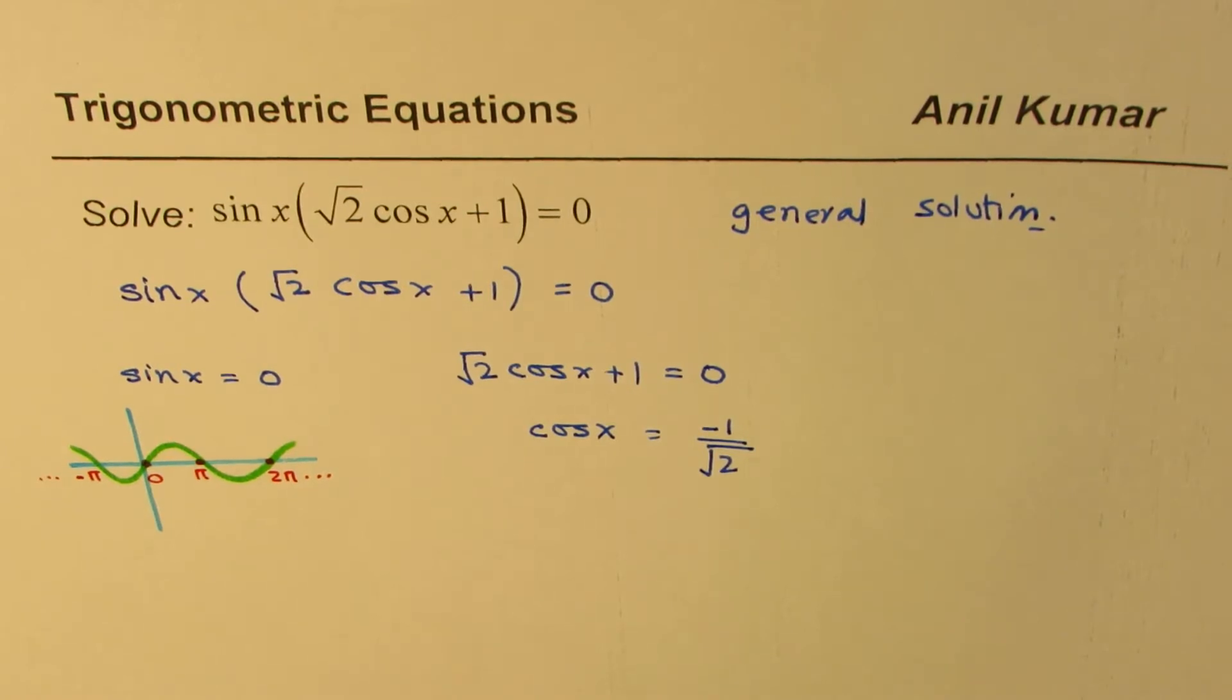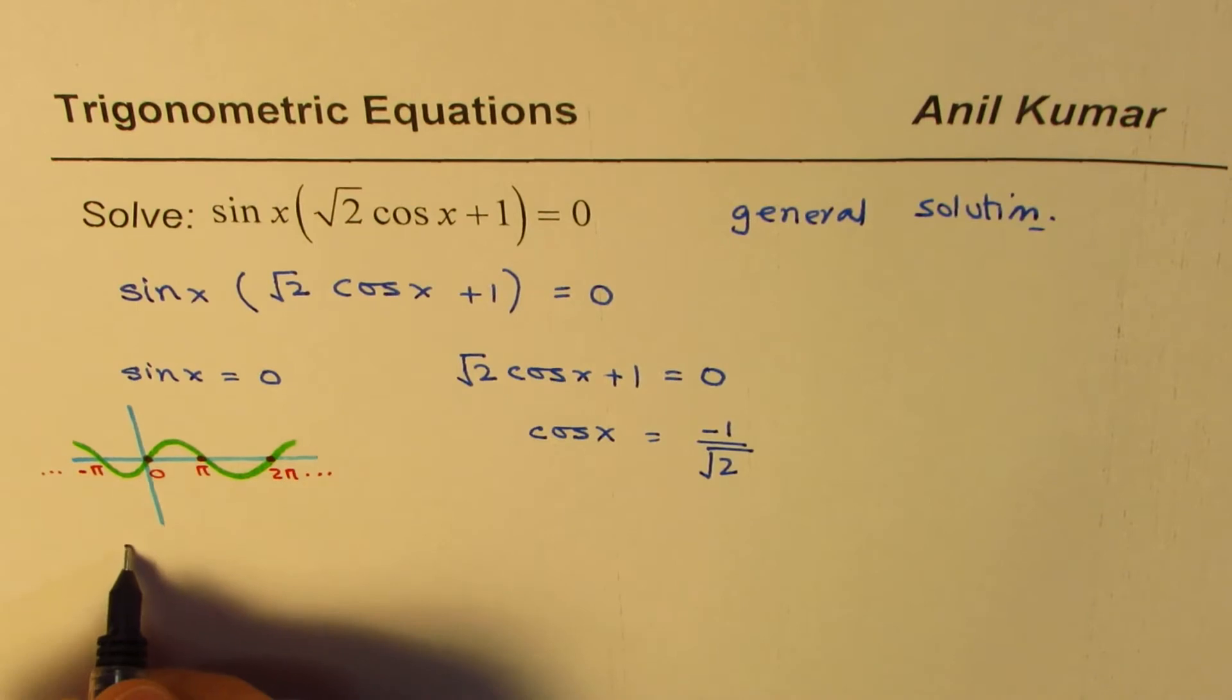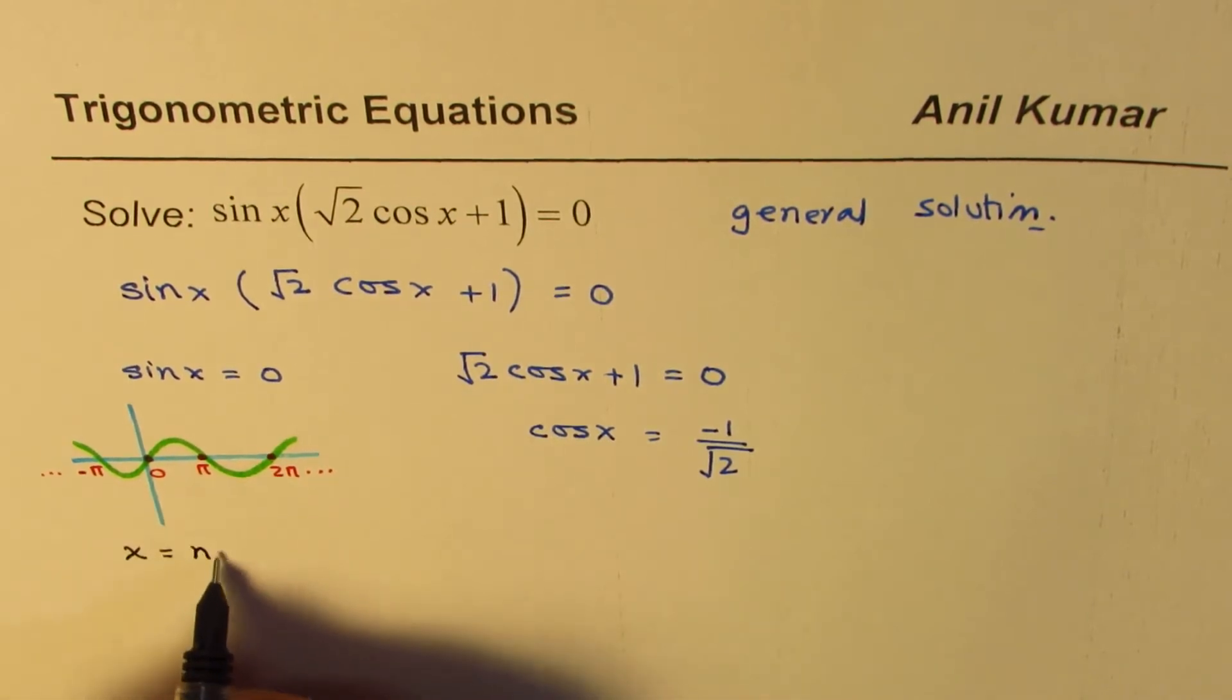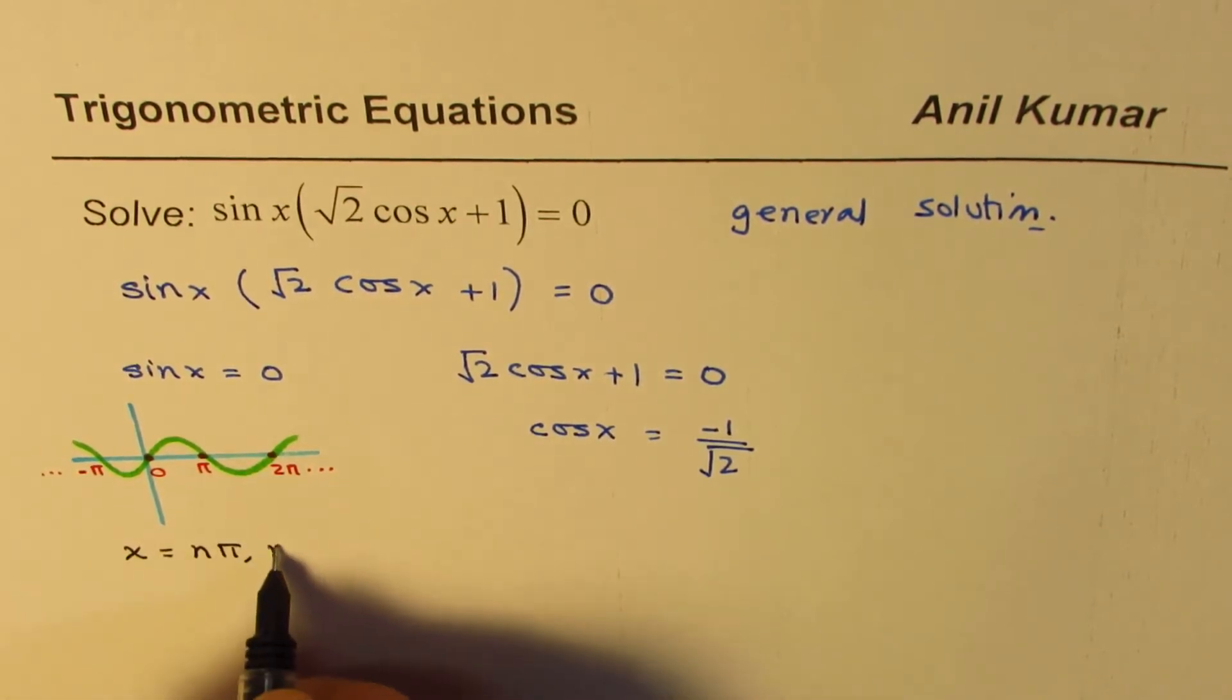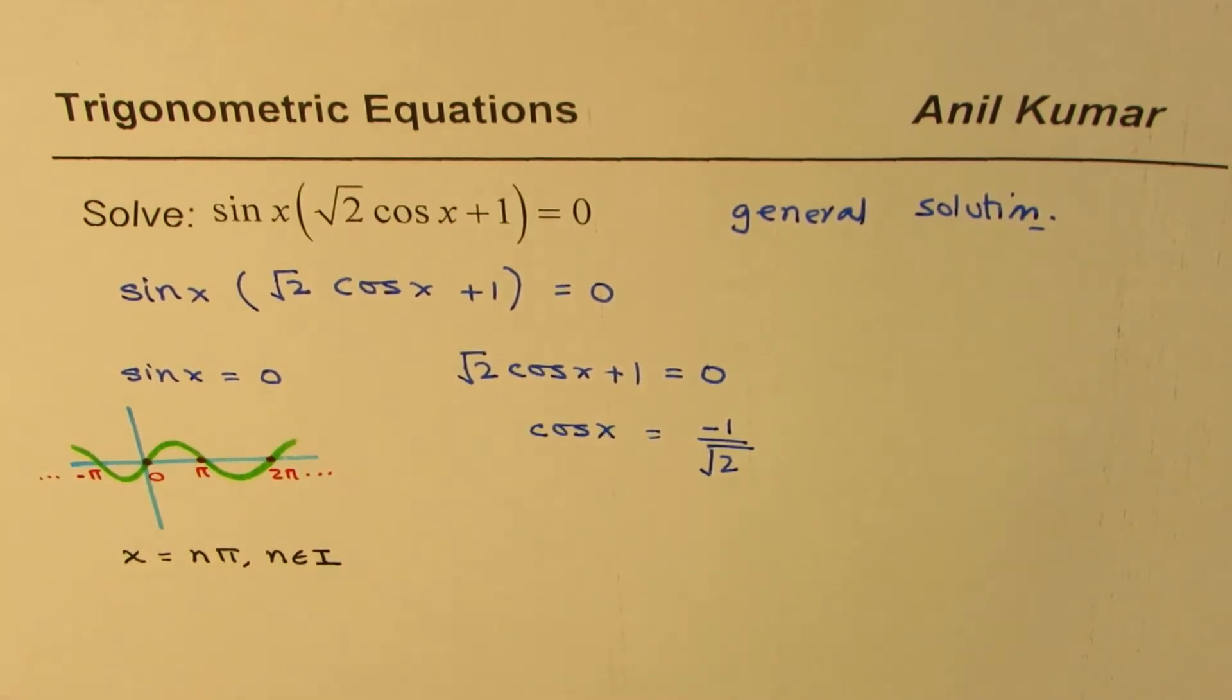So I could write down this solution in general form as x equals to n pi, where n belongs to a set of integers. So that gives me one set of solutions.